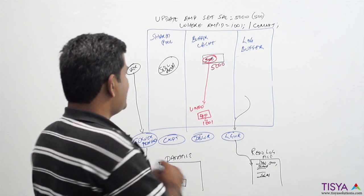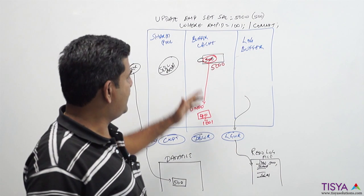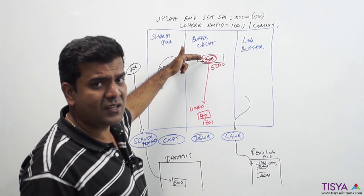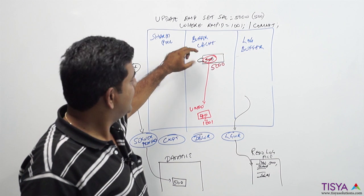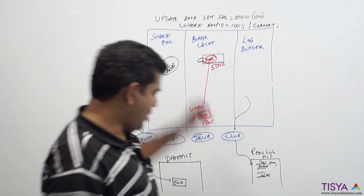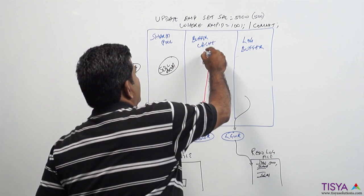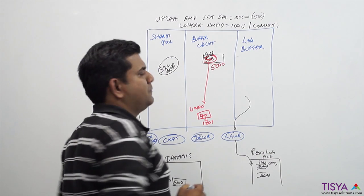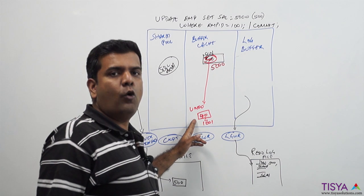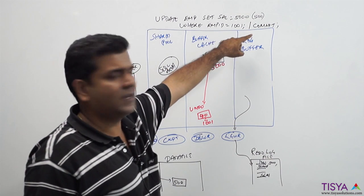There would have been a lock associated with this row. When the user is updating it, it would have acquired a lock so that no other user can update the same row. That lock will still be present till the time a commit is issued, and that lock will be released. The change is made permanent by updating the system change number into that block, and this undo entry can now be overwritten.